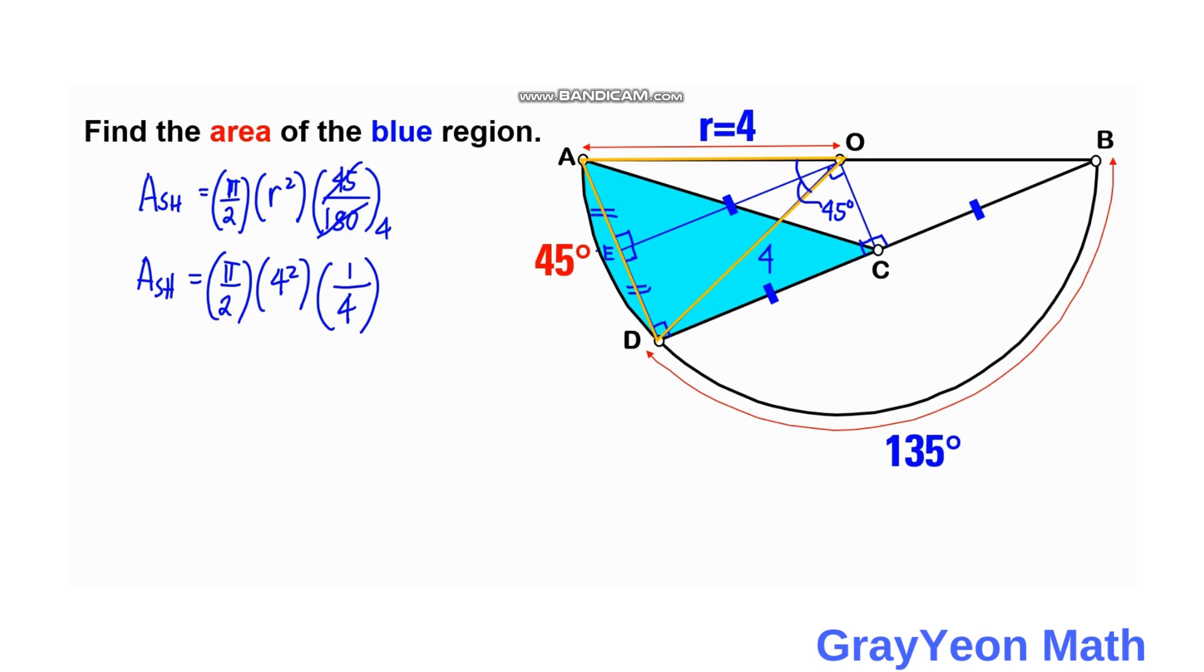So we can cancel this. This 2 and this 4. So we are left with the 4 and 2. So we can cancel this and this becomes 2 and this becomes 2. So area of the shaded region is simply 2 pi square units.